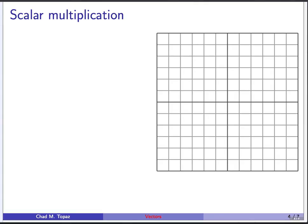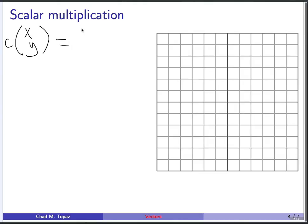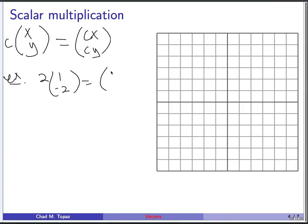The next thing I'd like to introduce is scalar multiplication. Algebraically, you have a vector (x, y), you multiply it by some constant c, and you get a new vector where that constant multiplies each element — giving you (cx, cy). For example, 2 times the vector (1, -2) is the vector (2, -4).